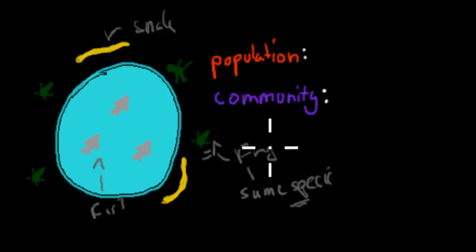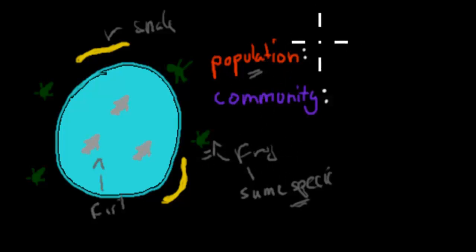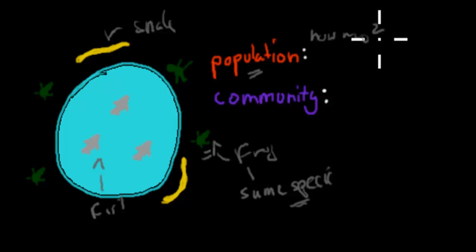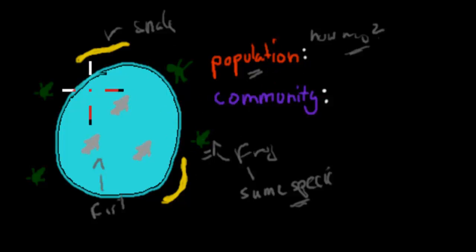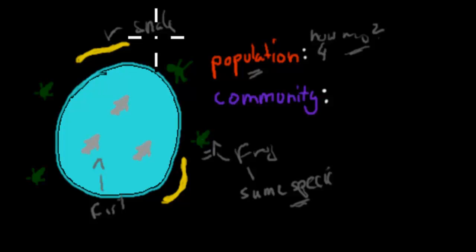So these frogs are the same species. Population is how many members of a species there are. To find out how many members of the frog population there are, we count: one, two, three, four. There are four frogs. There are two snakes and three fish.